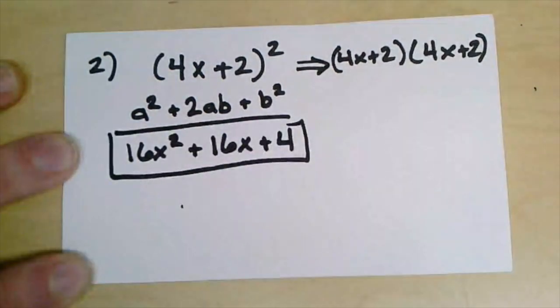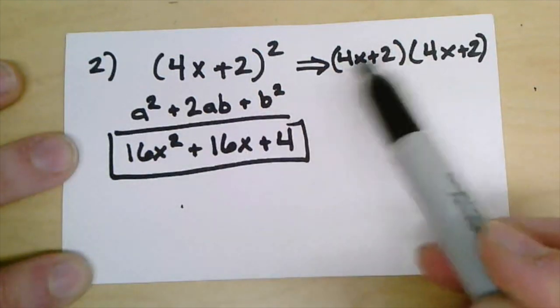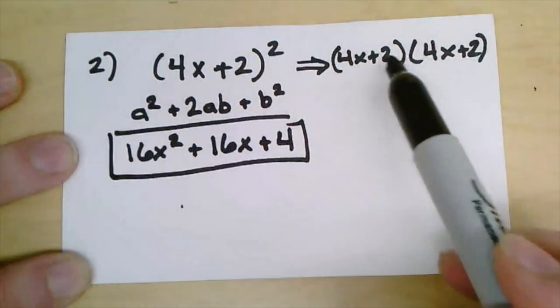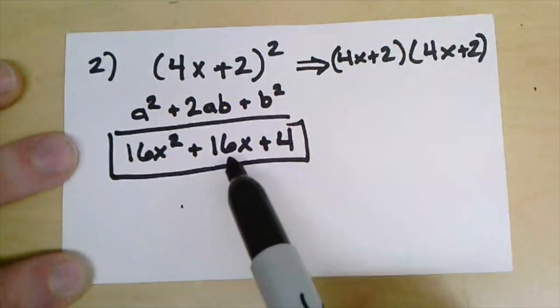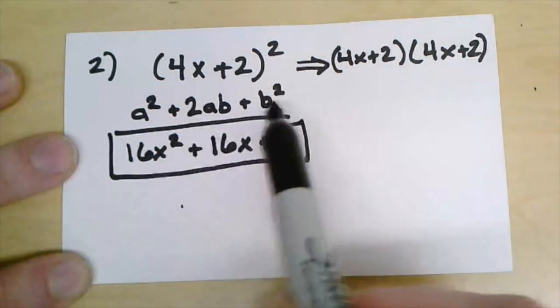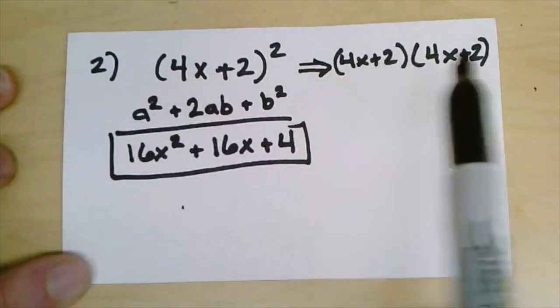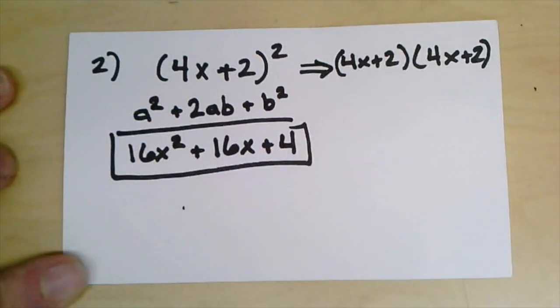Again I could go through and FOIL it out if I wanted to. 4x times 4x, that's my 16x squared. I'd have 4x times 2 which is 8x, and then I'd have another one on the inside that gives me the 16x, and then the 2 times 2 is 4. So this pattern right here is always going to be true when you see it written like this, or sometimes you might see it written like this, but either way you can use that squares of sums pattern.